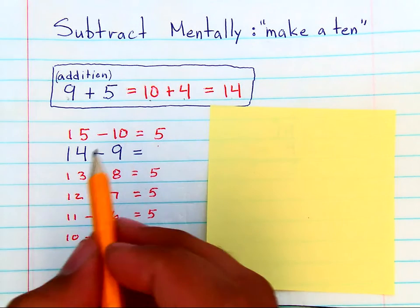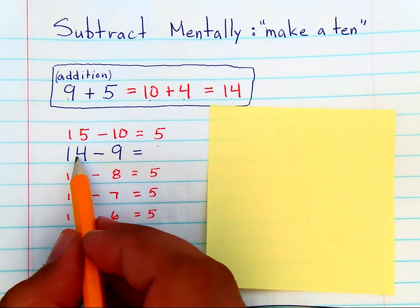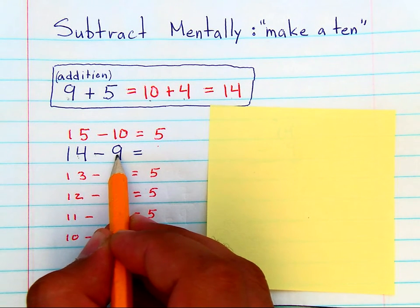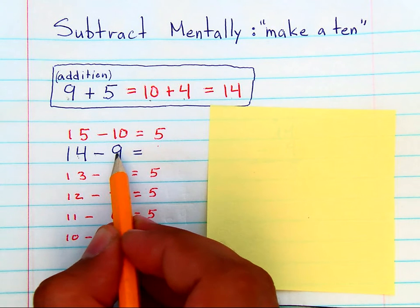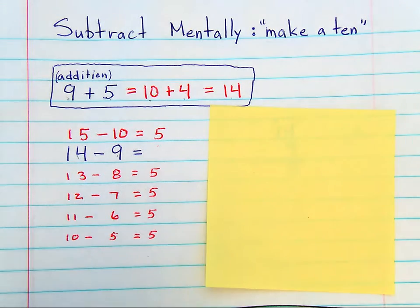Now in subtraction it's different, because if you have 14 minus 9, you can't just take one and give to the other. No, in subtraction, you'll notice that making a 10 is adding 1 to both.